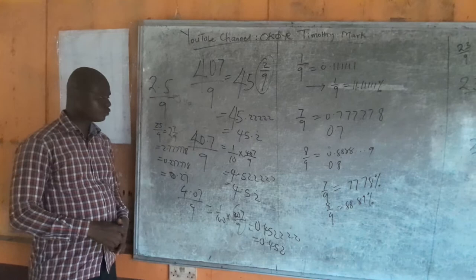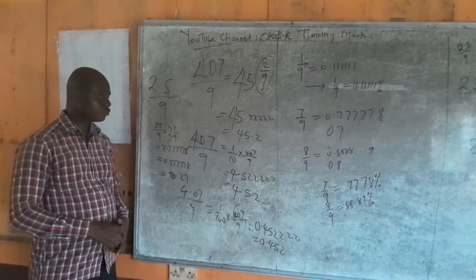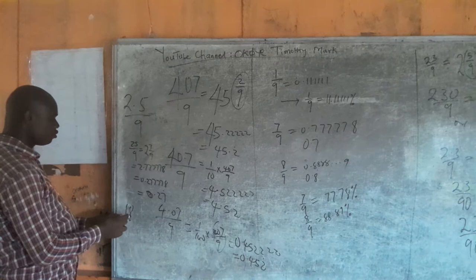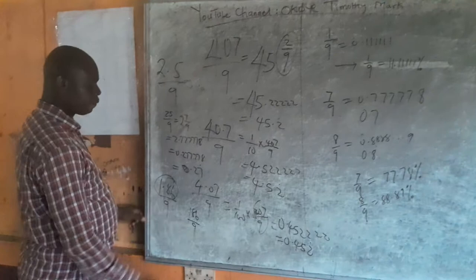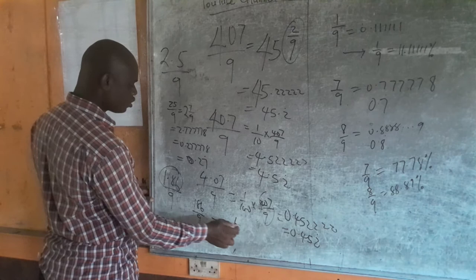If you give me 1.86 divided by 9, I don't want to recognize the decimal here. It's then 186/9. This gives you 20 remainder 6/9, and 6/9 is 0.666.